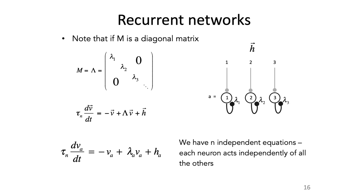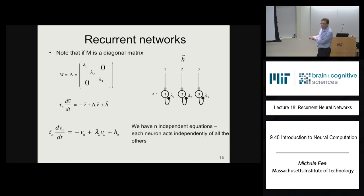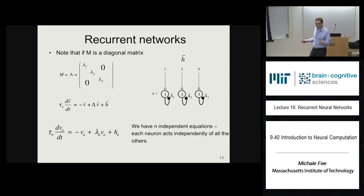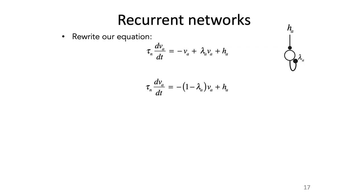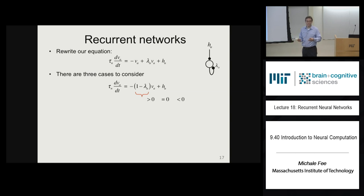We have an independent equation: the time derivative of the firing rate of neuron 1 depends only on its own firing rate, not on any other neurons. Let's rewrite this by factoring out v_a. This parameter 1 minus lambda_a controls what kind of solutions this equation has. There are three cases: 1 minus lambda greater than zero, equal to zero, or less than zero — three different values giving three different kinds of solutions.